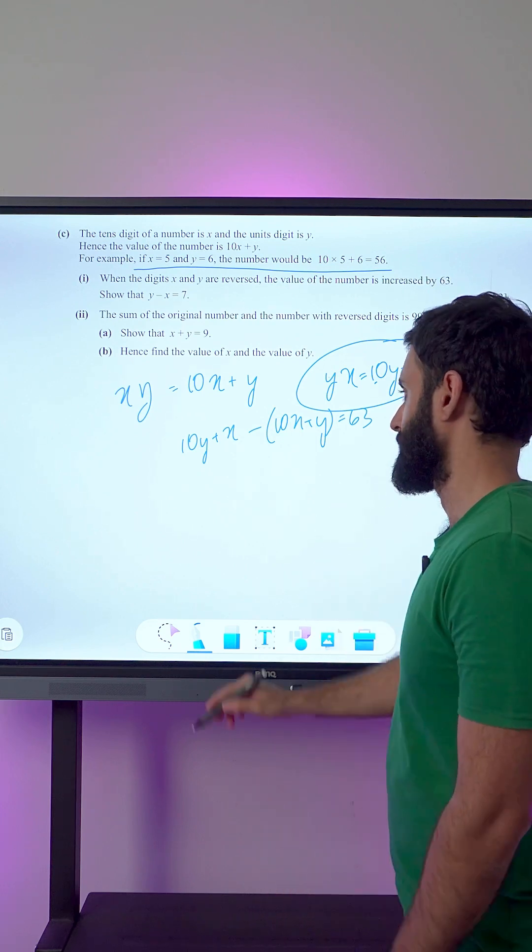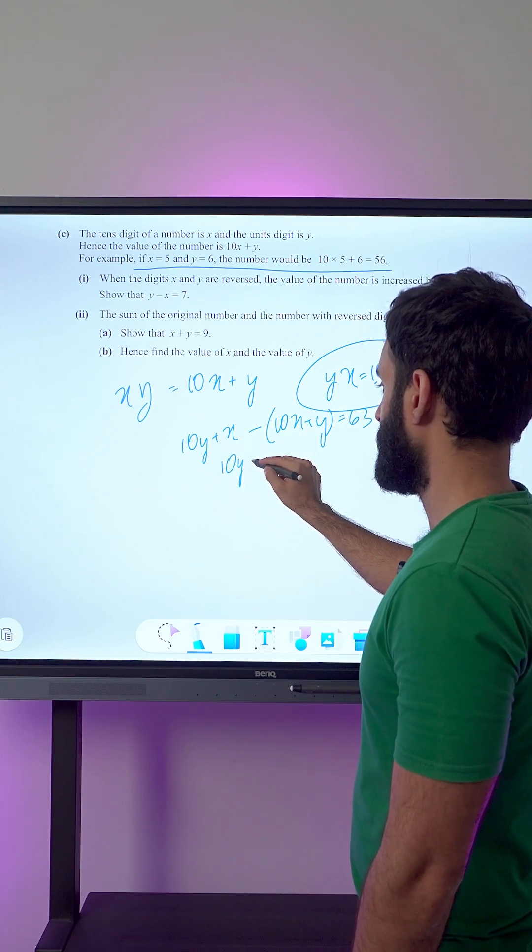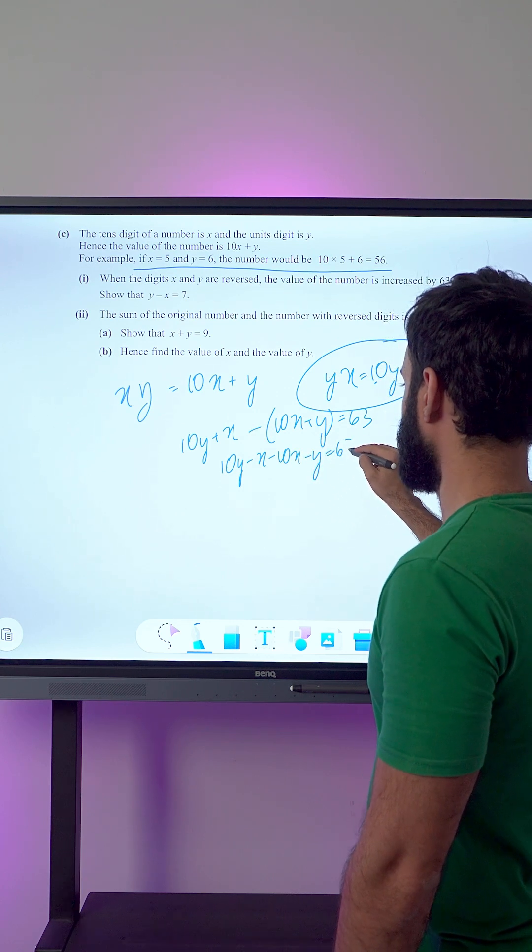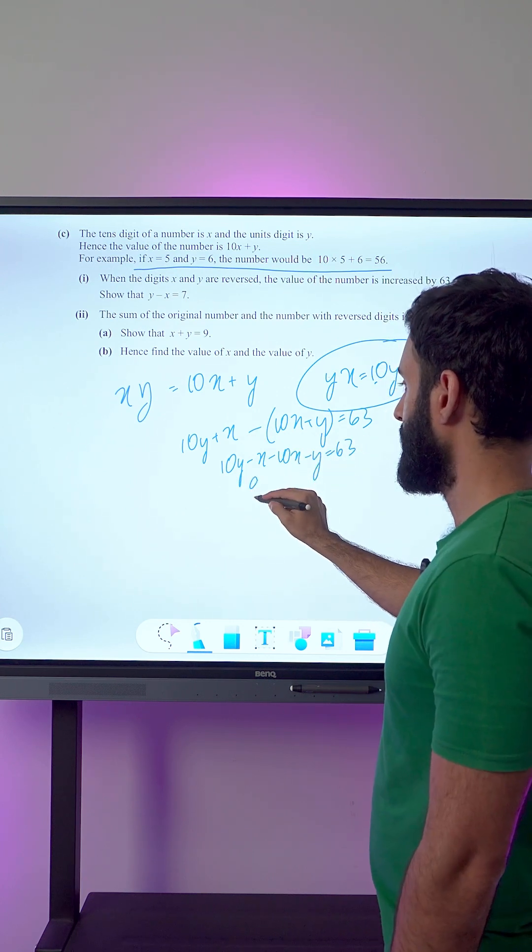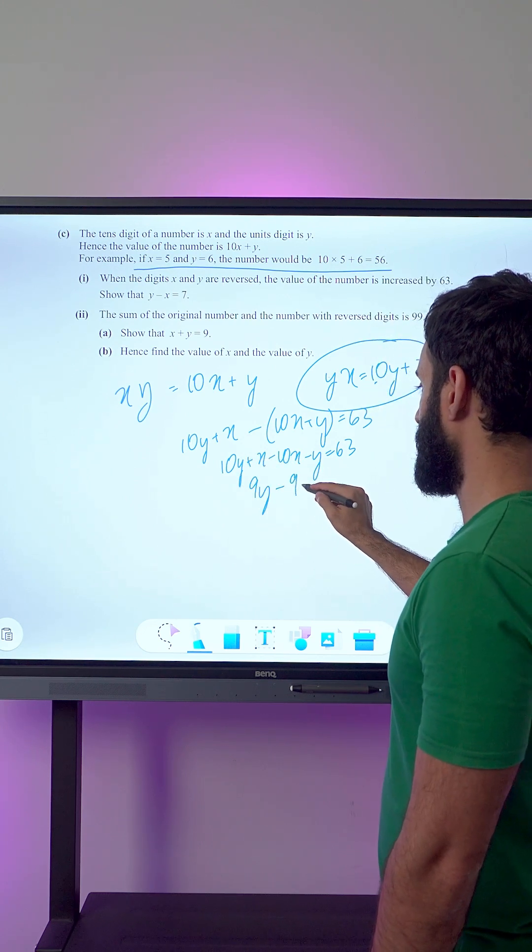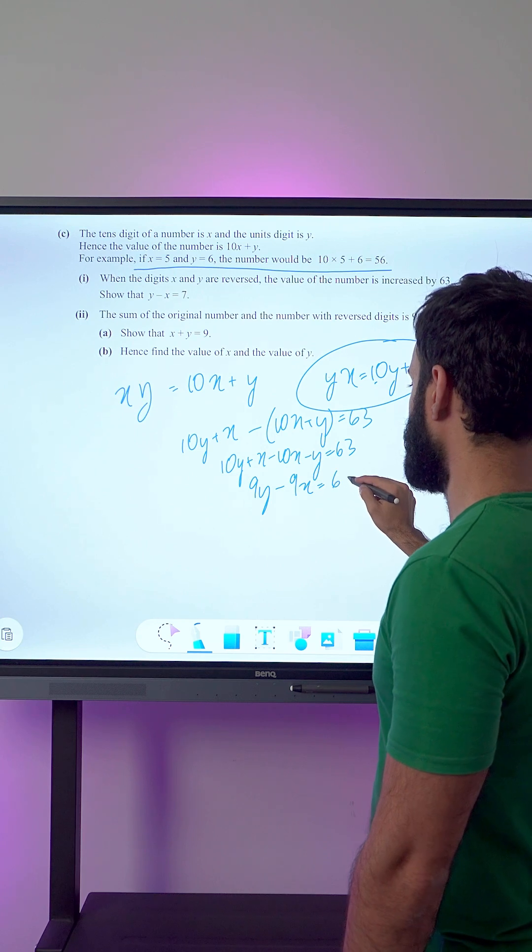Let's simplify this. We have 10y plus x minus 10x minus y equals 63. So 10y minus y is 9y, and x minus 10x is minus 9x, which equals 63.